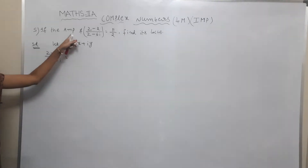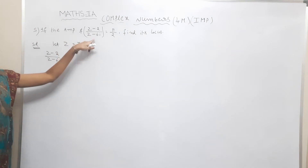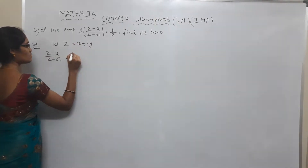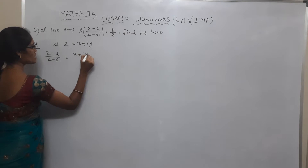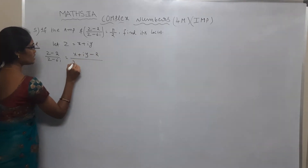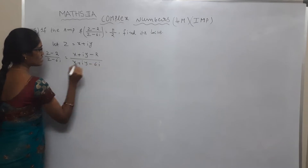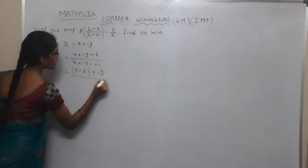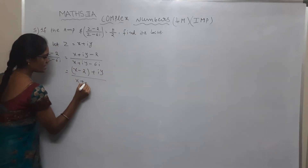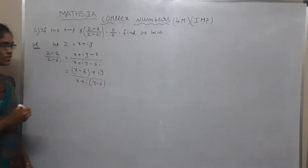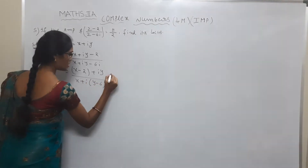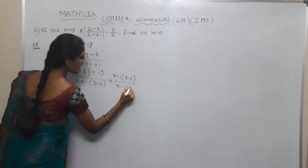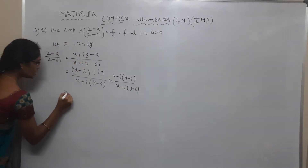I am first taking the amplitude of Z minus 2 by Z minus 6i. So Z minus 2 by Z minus 6i — substituting Z equals x plus iy gives: x plus iy minus 2 by x plus iy minus 6i. The real part is (x minus 2) and imaginary part is i(y minus 6). Now rationalizing with the denominator: multiply by x minus i(y minus 6) over x minus i(y minus 6).